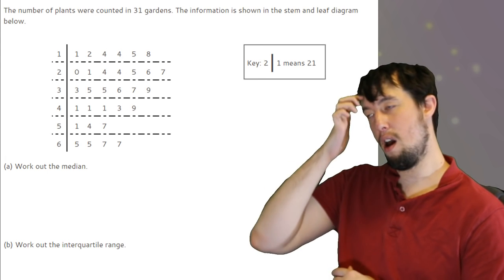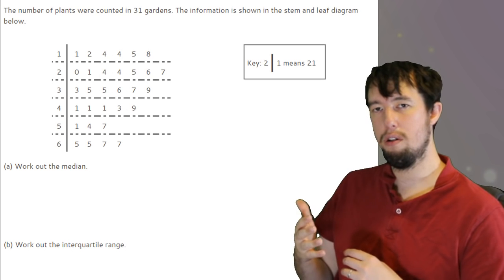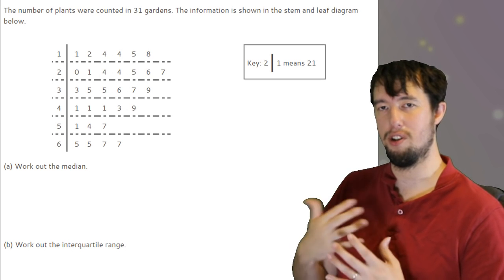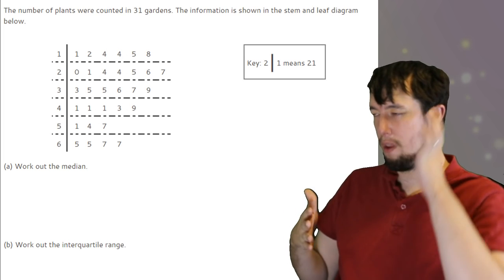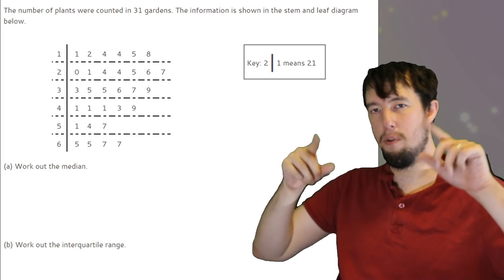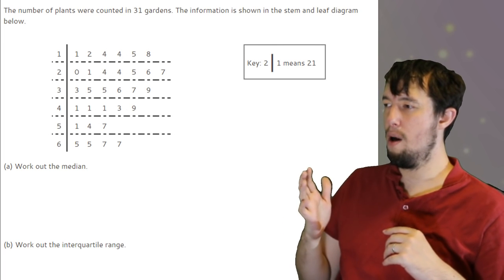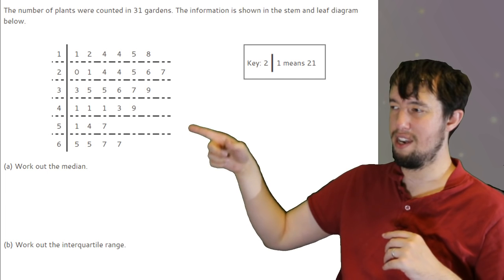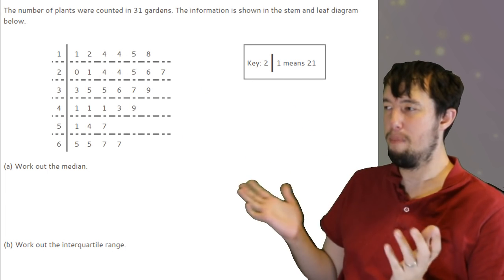To find the median, you work out how many values there are, 31. Add one, 32, and then half it, which is 16. And you find the 16th value. Or you can write them all out as numbers and then cross them off from each side. That's fine, that will work. Or you can cross them out from each side within the stem leaf diagram, top left, bottom right. That's slightly harder, but that will still work.